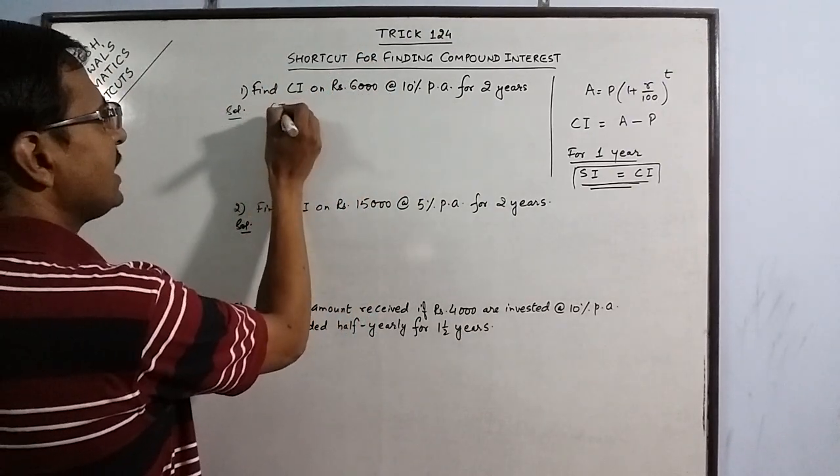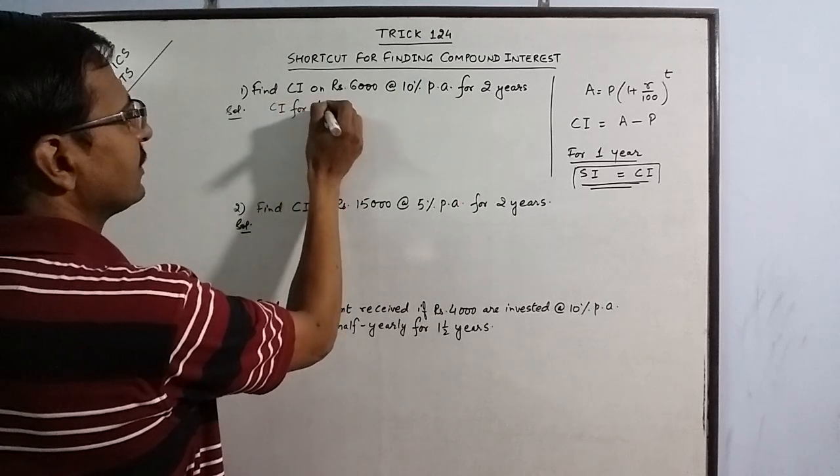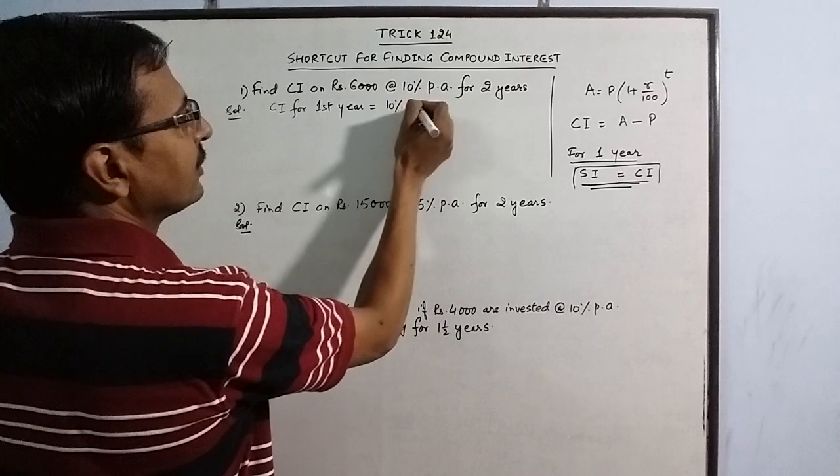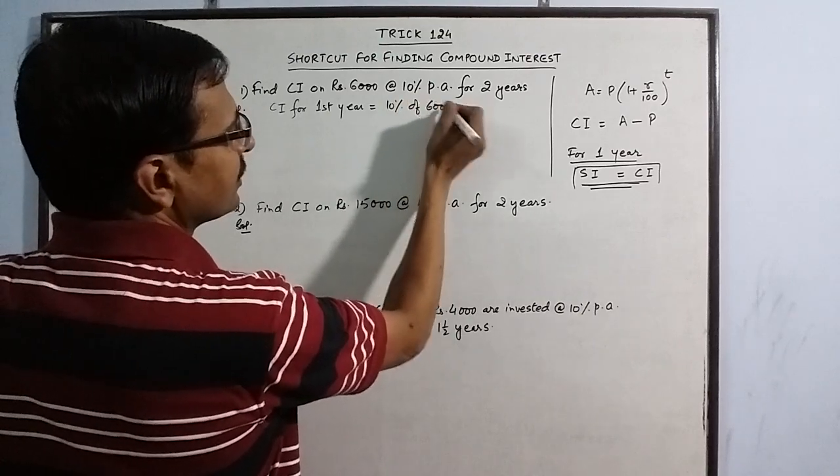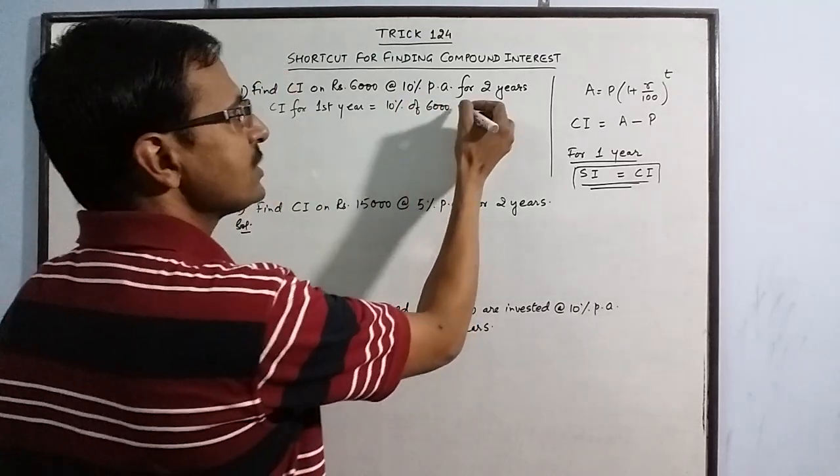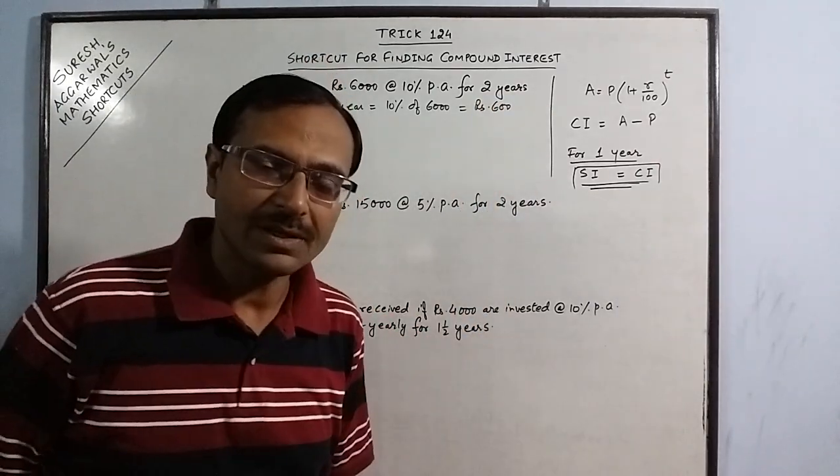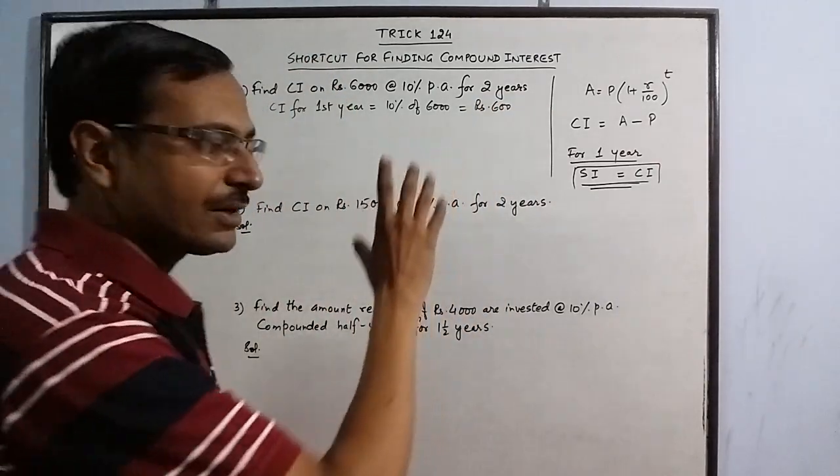In the solution, CI for first year, this is direct, this is 10% of 6000. You do not need to calculate, just remove 1 zero. 600. This is the interest received after 1 year.